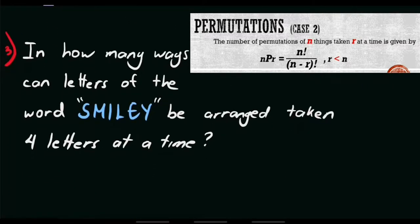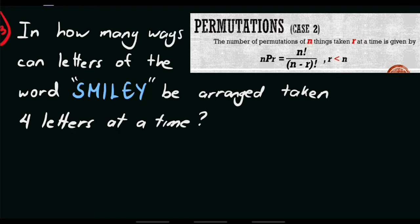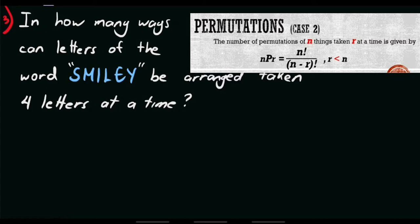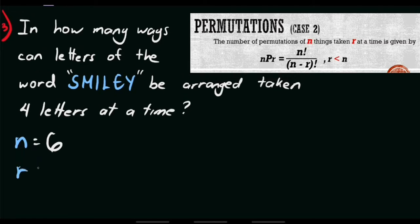Now let's try to solve some word problems involving permutations, case number 2. Problem number 3: in how many ways can the letters of the word SMILEY — S-M-I-L-E-Y — be arranged taking 4 letters at a time? We count the letters in SMILEY: S, M, I, L, E, Y — that's 6 letters, so n equals 6. Since we take 4 letters at a time, r equals 4.